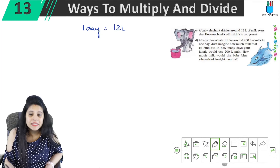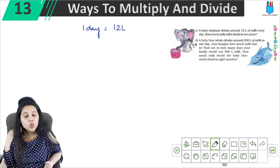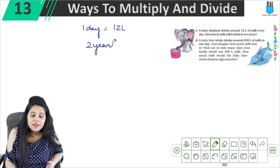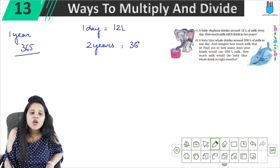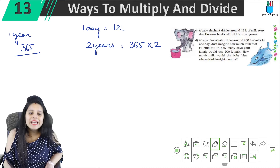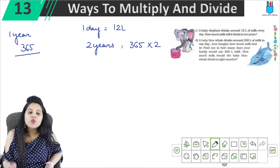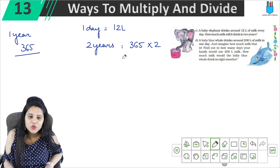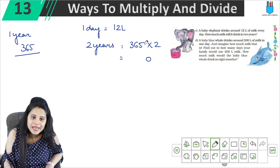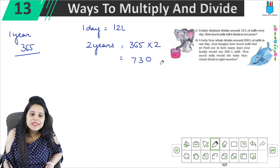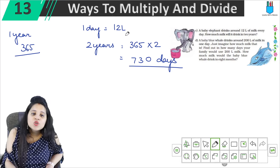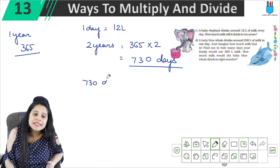Now how much milk will it drink in 2 years? We know 1 year is 365 days, so 2 years is 365 into 2 days. You can also do 365 plus 365. Multiplying: 2 into 5 is 10, 2 into 6 is 12 carry 1, 2 into 3 is 6 plus 1 is 7. So in 2 years there are 730 days, and we need to find the total for 730 days.